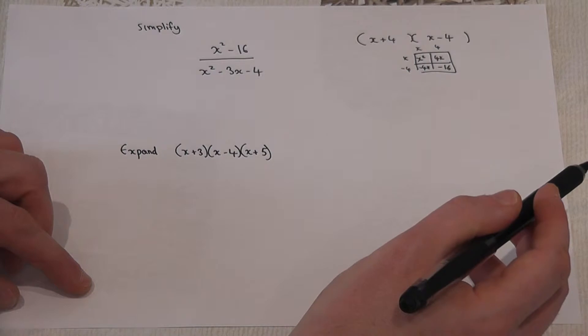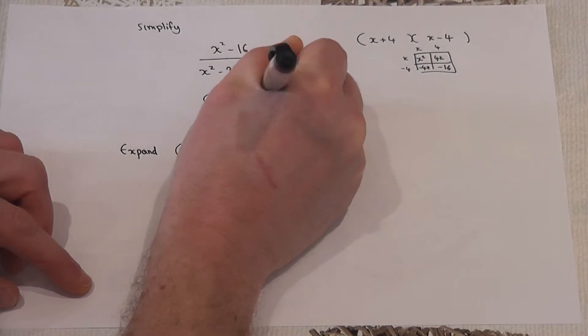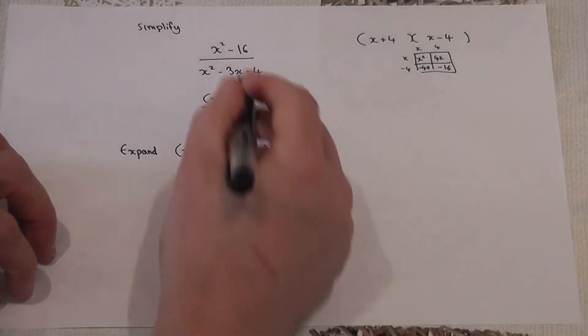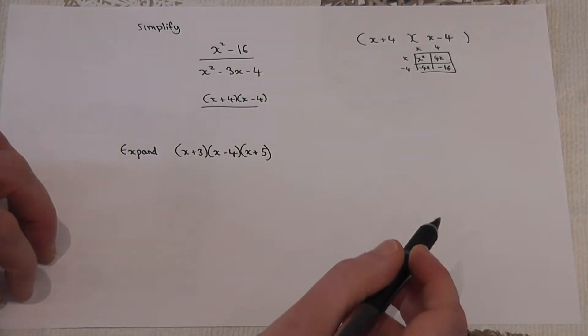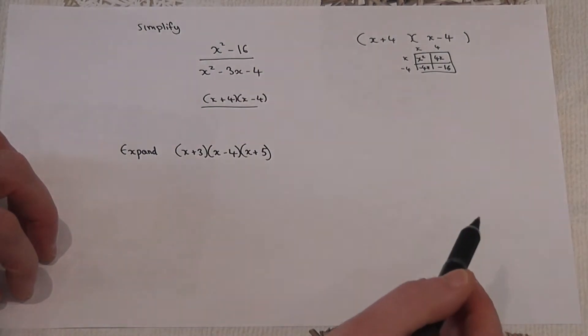So the top of the fraction is just x plus 4 and x minus 4. Now for the bottom of the fraction, I'm going to find two numbers which times to make minus 4, which add to make minus 3.